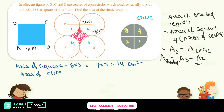For the circle, the diameter spans the full side of the square, so the diameter is 7 centimeters, and the radius is 3.5 centimeters.